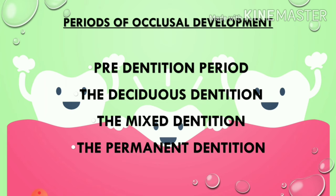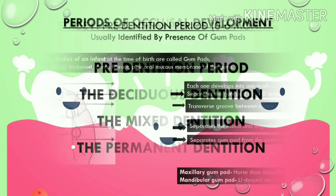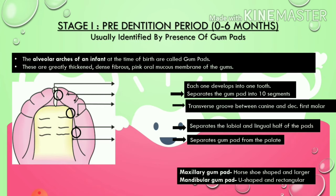Moving on to Stage 1, the pre-dentition period, from 0 to 6 months, which is usually identified by the presence of gum pads. Just as adults have maxillary and mandibular ridges, the alveolar arches of an infant at the time of birth are called gum pads. Let's see the parts of gum pads in detail.